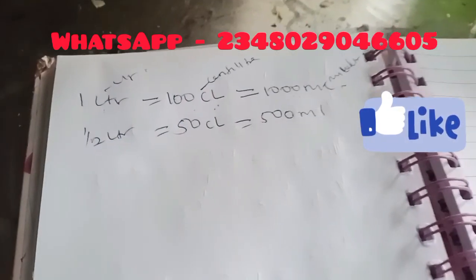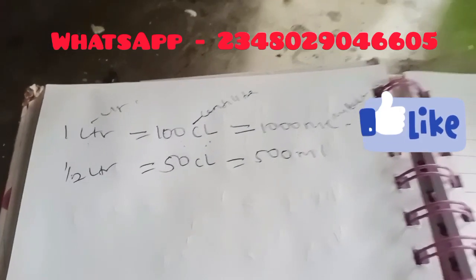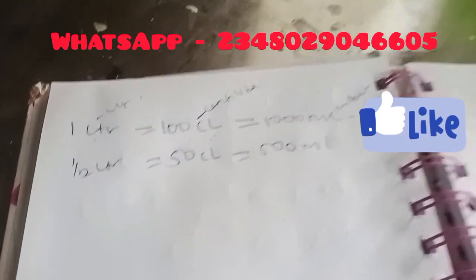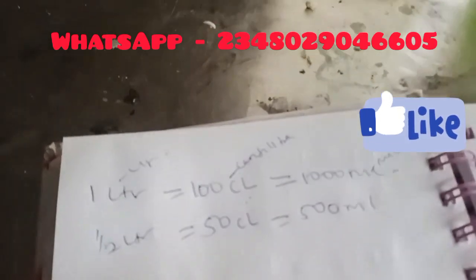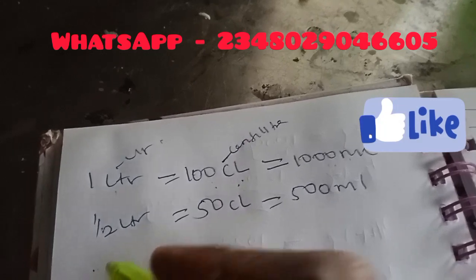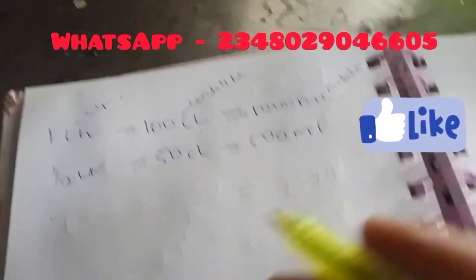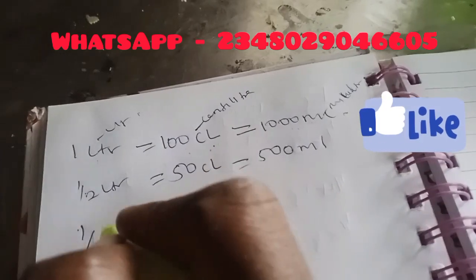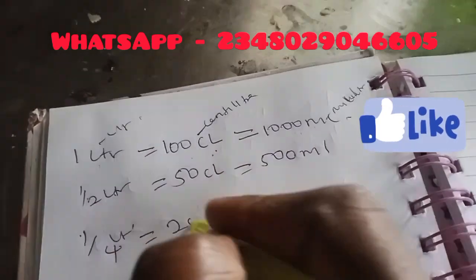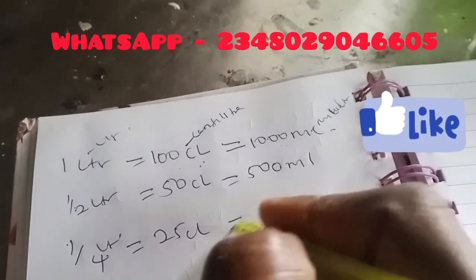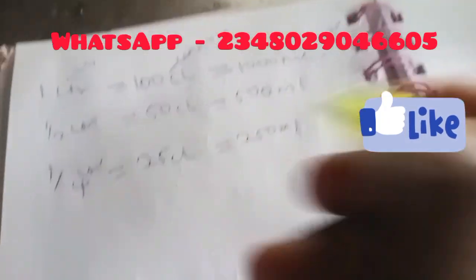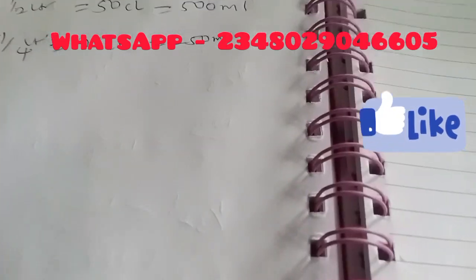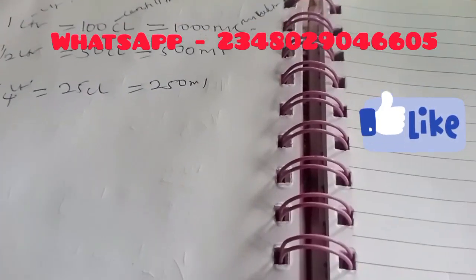Quarter liter equals 25 cl, which is the same thing as 250 ml. So they are all the same thing — simple and straightforward. If they give you anything in cl, just convert accordingly.